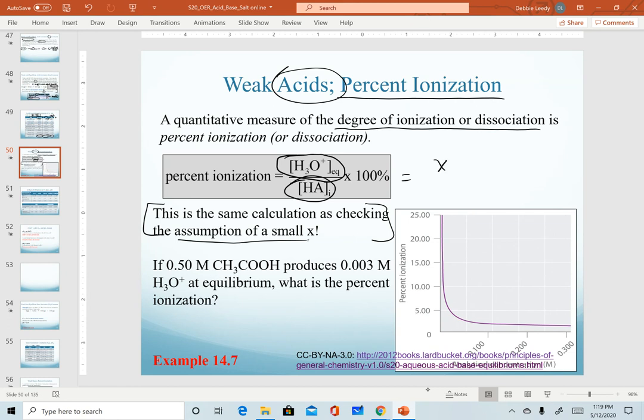And so realize that this setup is exactly the same as what we used in our pH calculations earlier. So when we were determining whether we were within or less than 5% error, we were actually calculating percent ionizations.